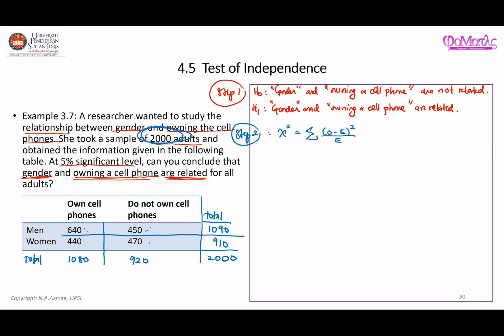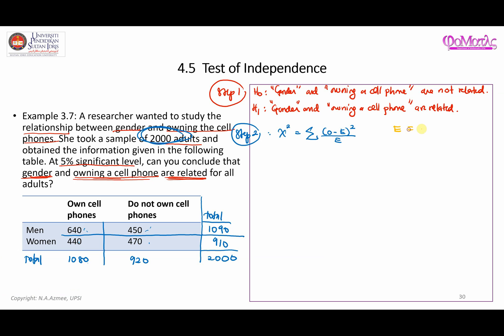To find the expected value for each cell, we follow the formula E = R × C / T, where T is the grand total, R is the row total for that cell, and C is the column total for that cell. For example, the cell in the first row and first column has a row total of 1,090 and a column total of 1,080, so its expected value is 1,090 × 1,080 / 2,000.